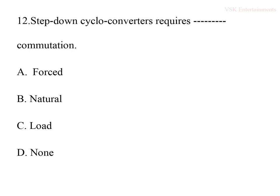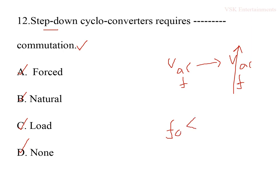The twelfth question: step-down cycloconverter requires which type of commutation? Options are forced commutation, natural commutation, load commutation, or none. A cycloconverter converts fixed AC voltage at fixed frequency to variable AC voltage at variable frequency. In a step-down cycloconverter, the output frequency is less than the input frequency, and the SCRs are naturally commutated — no forced commutation is required. So option B (natural commutation) is the correct answer.